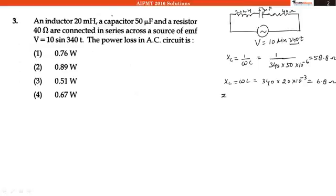Now, the impedance Z of the circuit will be R square plus Xc minus XL square. After putting the values, R is 40 and Xc minus XL, that is 52 square. After solving, we will get root of 4304 Ohm.